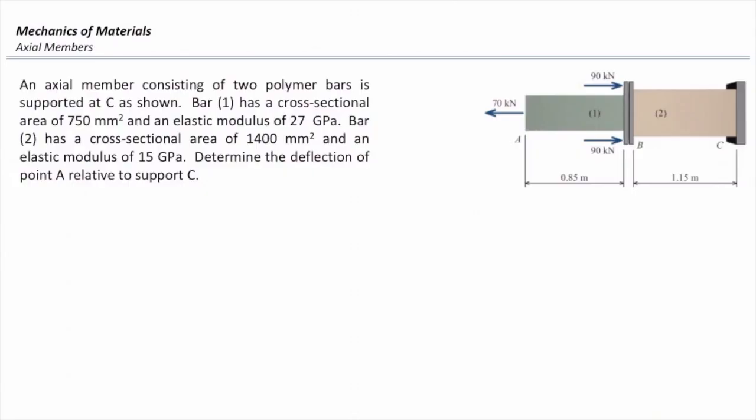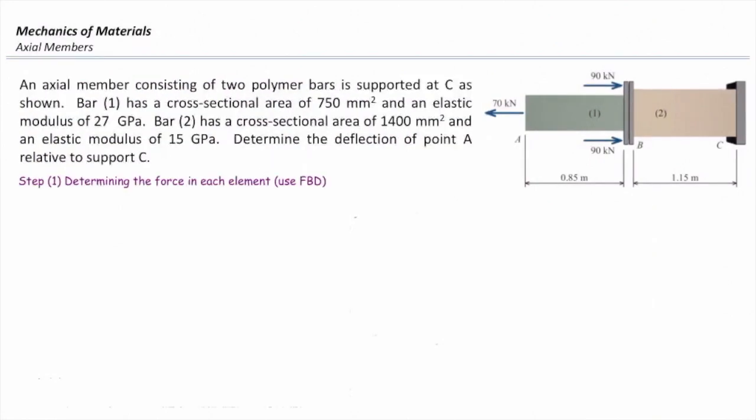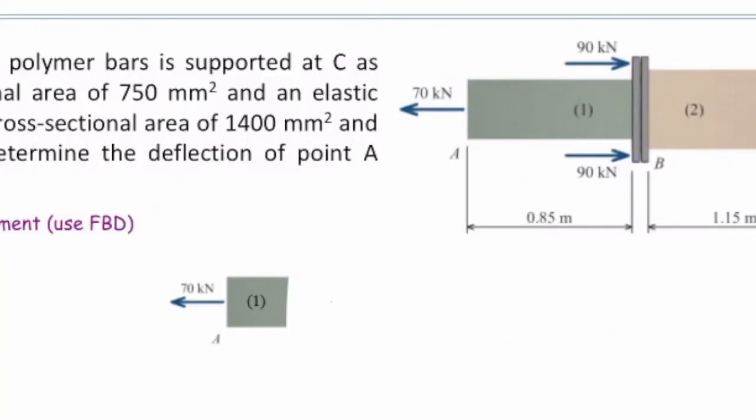The first step is using the free body diagram to determine the internal force in each element. In bar 1, I'm going to cut that structure somewhere between A and B to make bar 1 free, like this. At the cut section, we put an unknown force, and I will call that F₁.